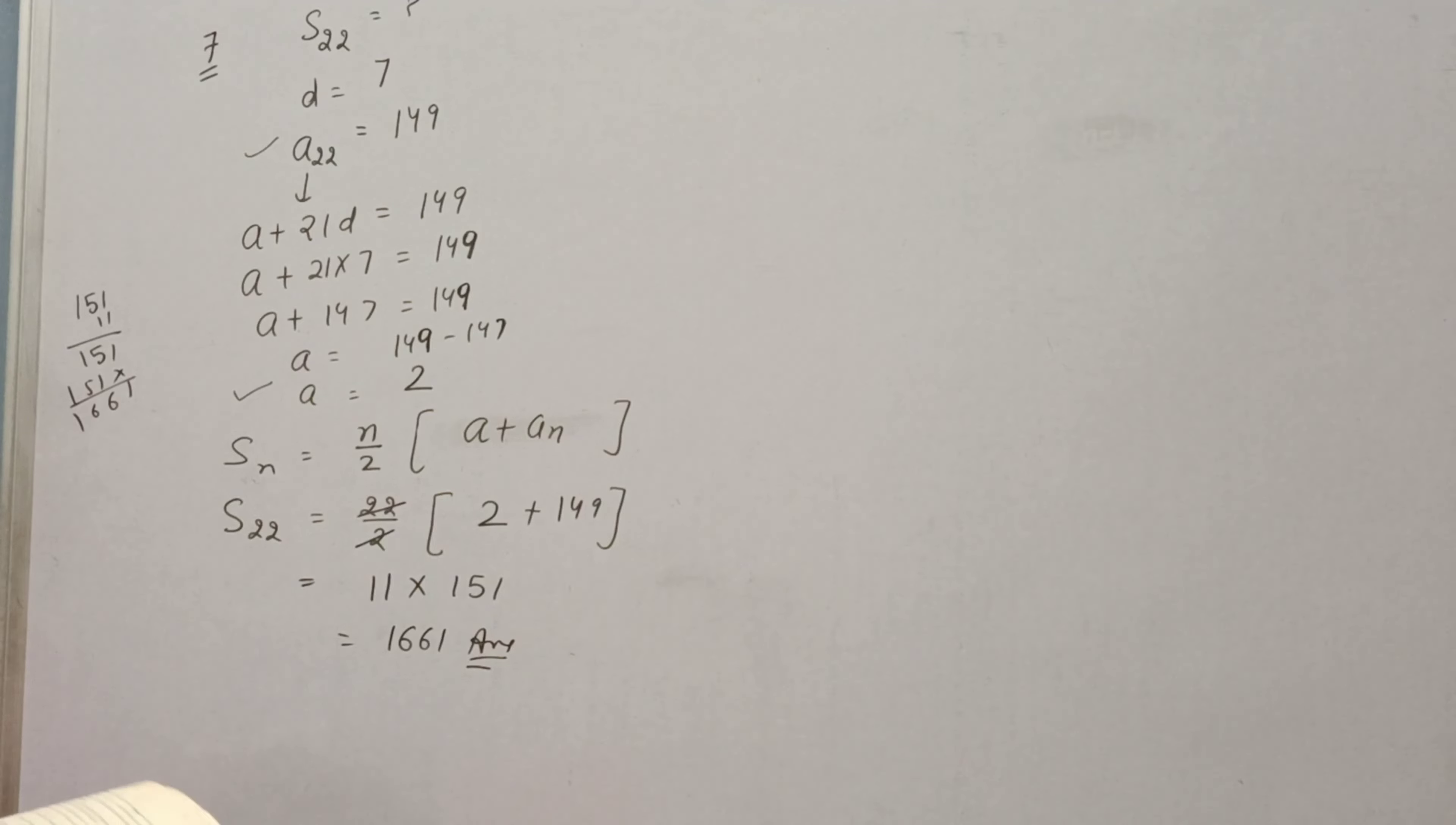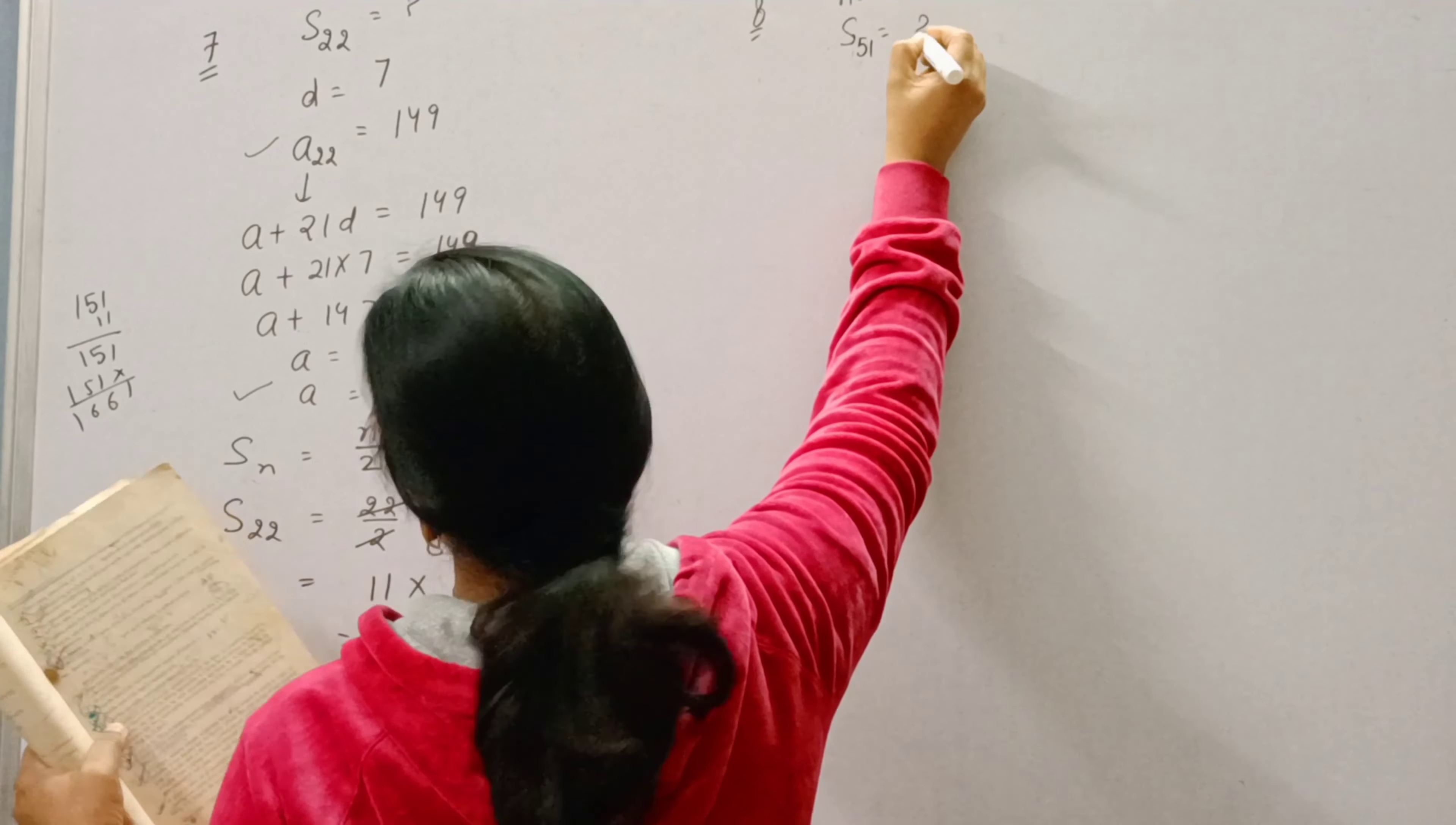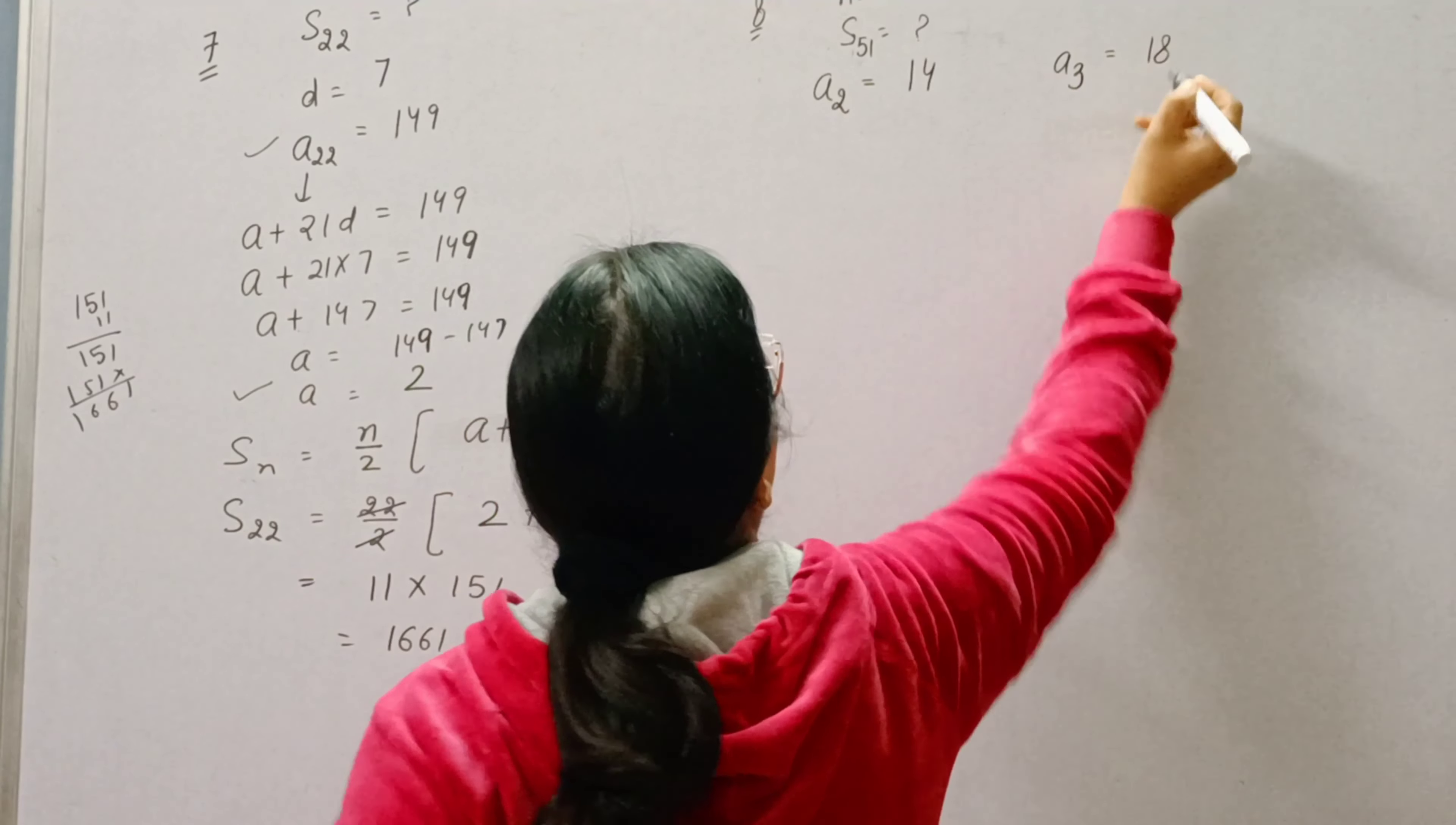Now question number 8: Find the sum of first 51 terms. N is equal to 51 and we need to find S51. Find the sum of first 51 terms of an AP whose second term is 14 and third term is 18 respectively.